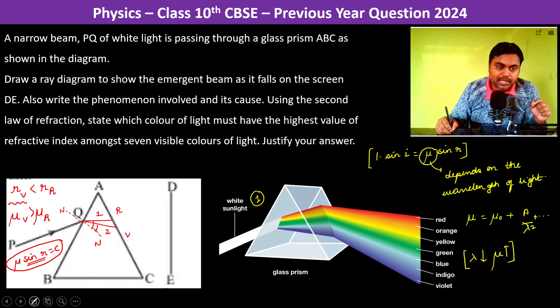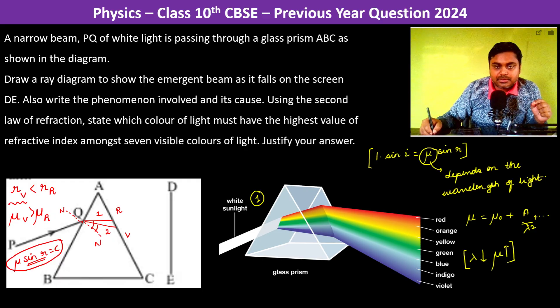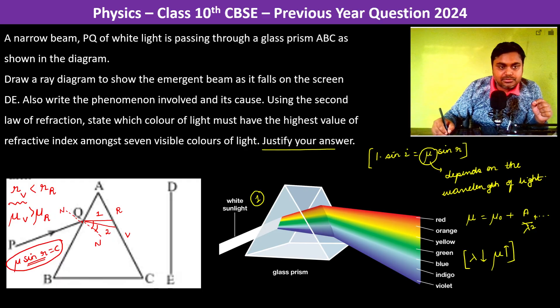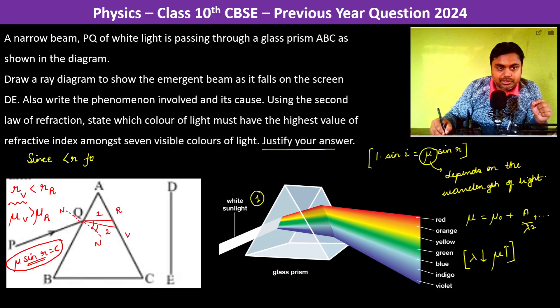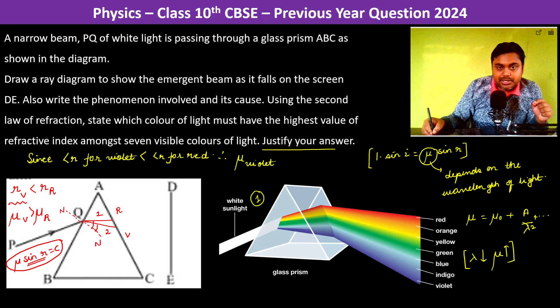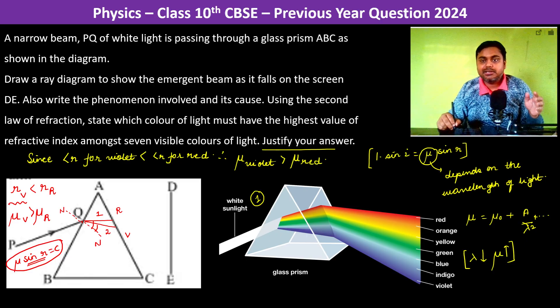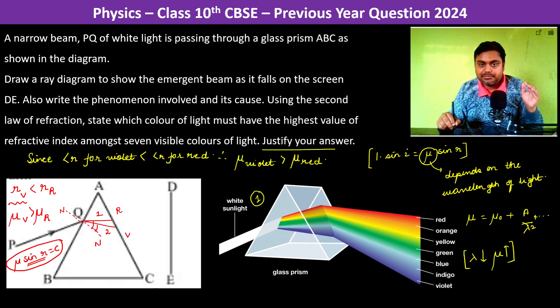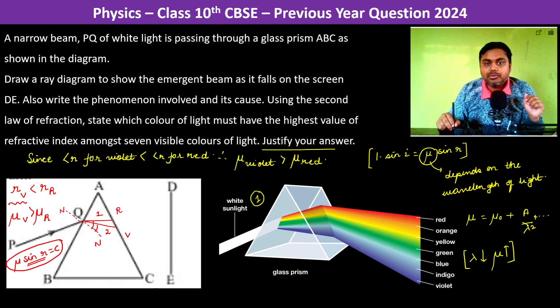So if sin r or if r increases then µ is going to decrease and vice versa. So therefore here we can justify it that since the angle of refraction for violet is less than the angle of refraction for red, therefore µ of violet should be greater than µ of red. And thus we can tell that the refractive index of violet is more.